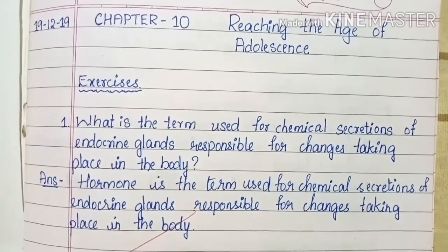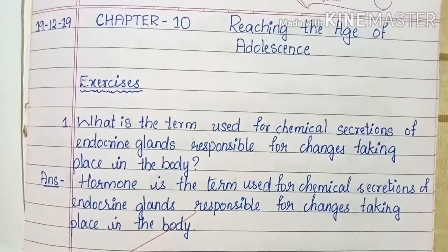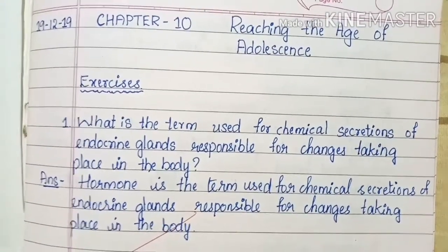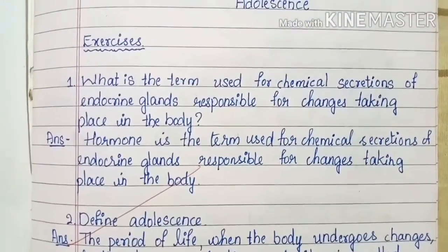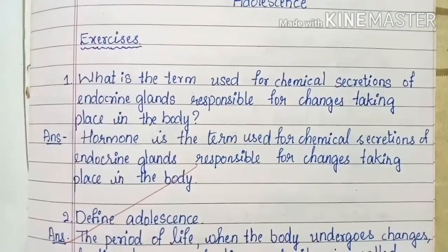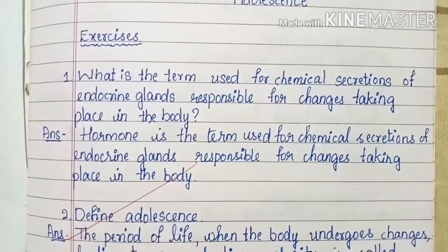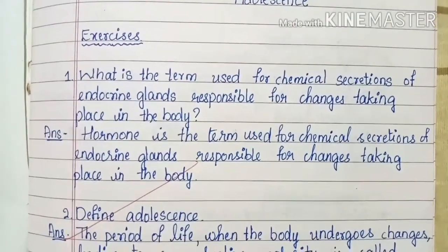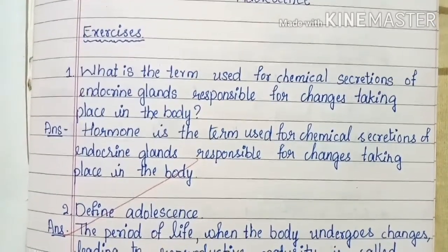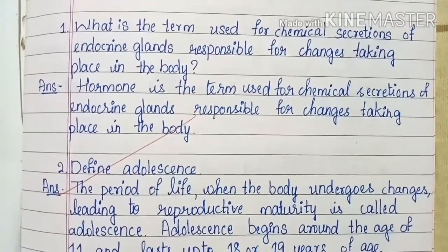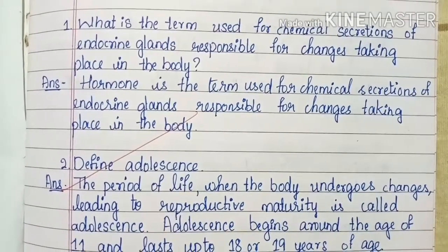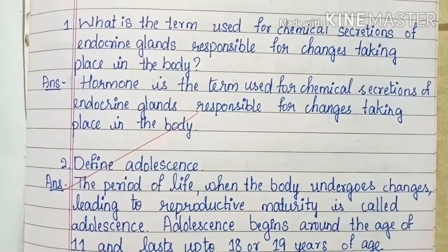First question: What is the term used for chemical secretion of endocrine glands responsible for changes taking place in the body? Hormone is the term used for chemical secretions of endocrine glands responsible for changes taking place in the body.